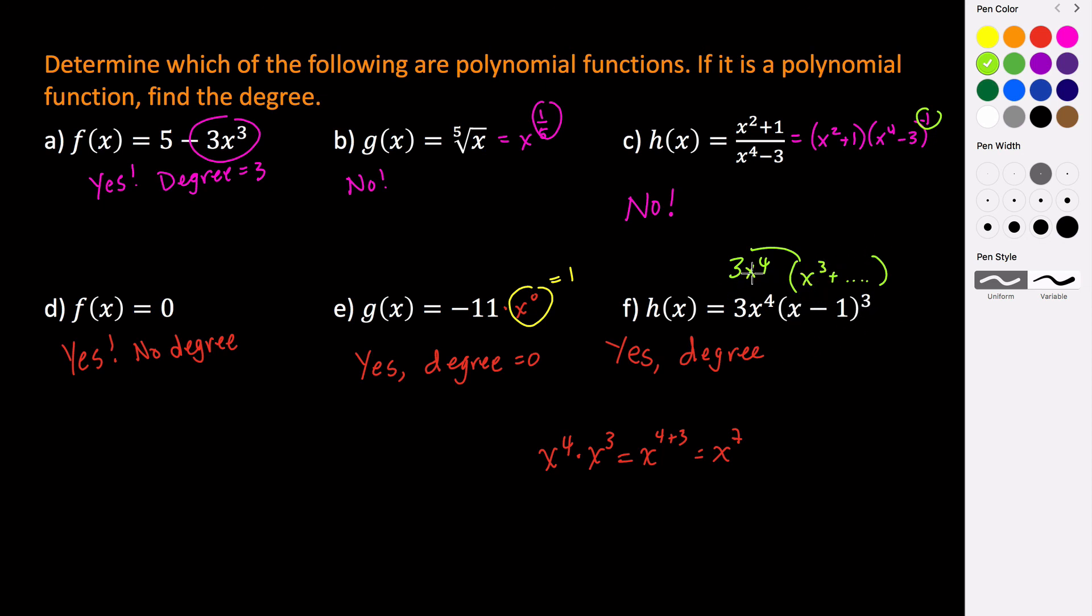And so when we do that, we're going to get 3 times x to the 4th times x cubed, which is going to give us something similar to what we had here. And it's actually going to give us 3x to the 7th. So if we were to distribute this 3x to the 4th through to everything, the highest power we would get would be 3x to the 7th, which means the degree for this polynomial is 7.